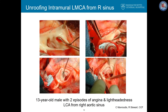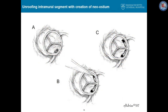An intramural left coronary from the left sinus is also shown here in a 13-year-old male with two episodes of angina and lightheadedness. When the intramural segment passes behind the commissure of the aortic valve, it is sometimes possible to simply create a second ostium in the correct sinus without unroofing the entire length of the intramural segment, and that is shown here.